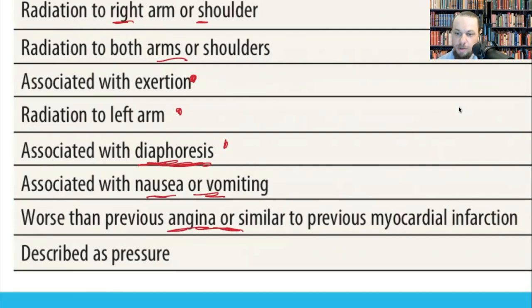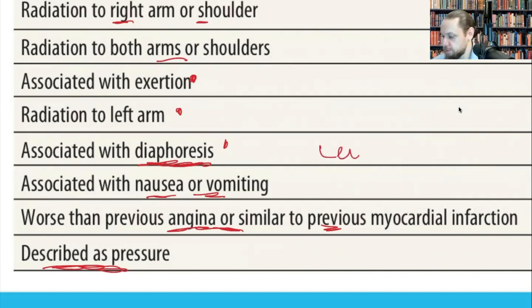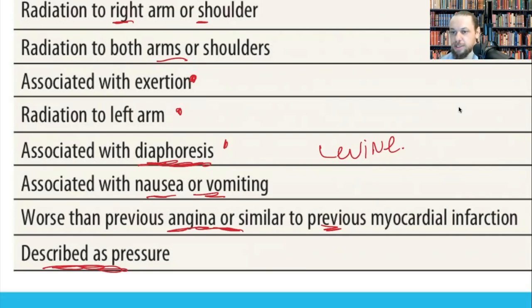If truly having a myocardial infarction, it will be worse than previous angina episodes where pain resolved with rest. It may be similar to a previous heart attack. The pain is often described as pressure. If you see someone clutching their chest — that is called the Levine sign, a classic pathognomonic sign of acute coronary syndrome. If anyone is clutching their chest saying it feels like an elephant sitting on their chest, be very worried — this is the real deal.